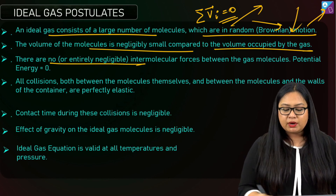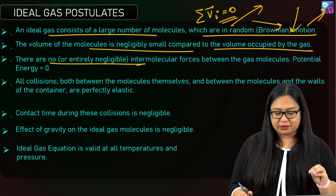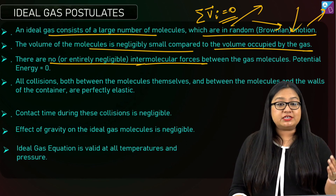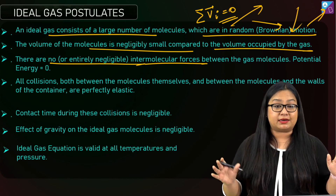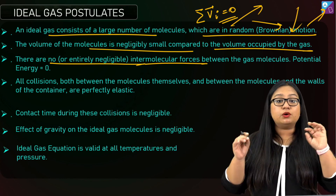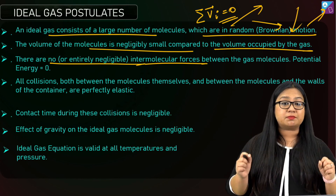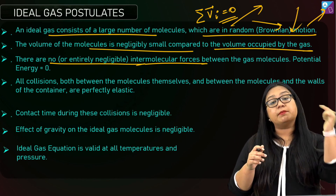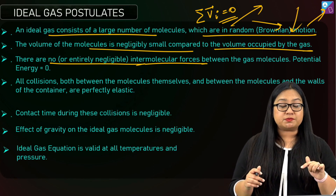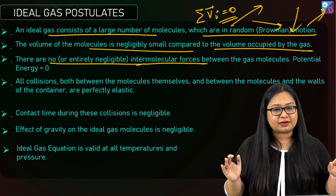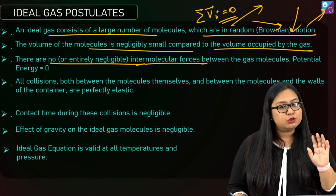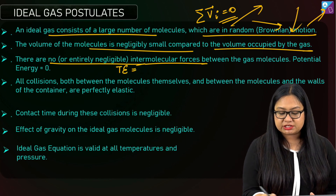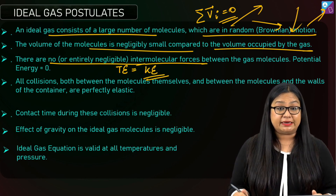Because there are no intermolecular forces, the potential energy between the gas molecules is zero. So in the case of an ideal gas, the total internal energy is just equal to the kinetic energy of all the gas molecules combined. Fourth postulate: all collisions, both between the molecules themselves and between the molecules and the walls of the container, are perfectly elastic — meaning no loss of kinetic energy. No loss of energy is what we are assuming.